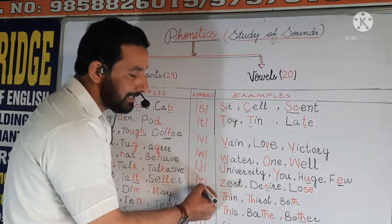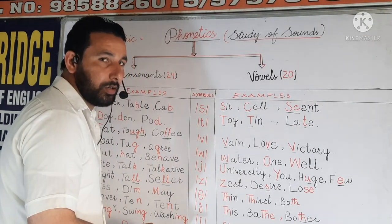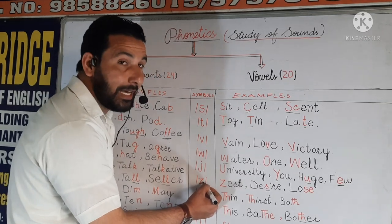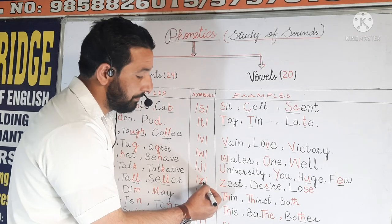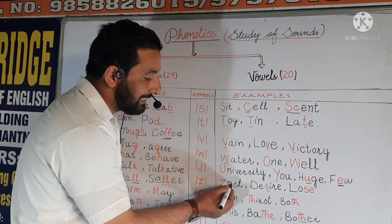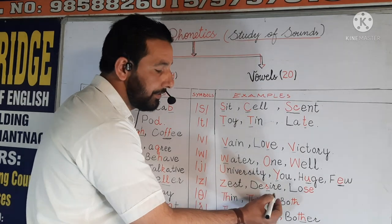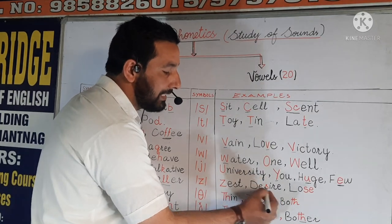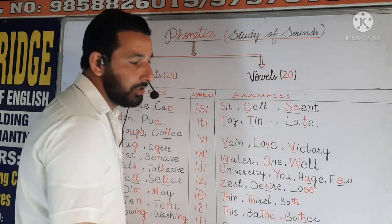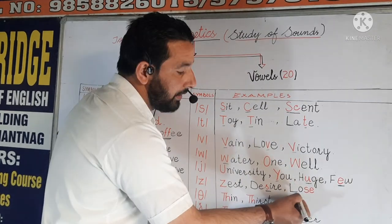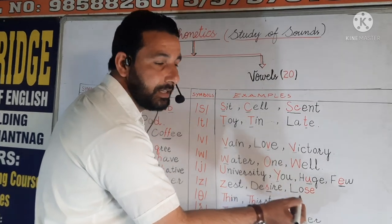Next symbol looks like Z and has the sound Z. For example, we have 'zest'. Next is 'desire' — here we have the sound Z. And 'lose' — at the end of this word, we have the sound Z.